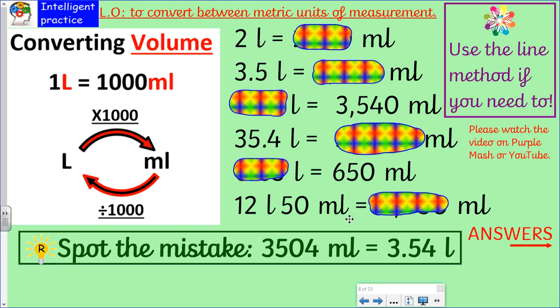And then we've got to spot the mistake for your reasoning problem. 3,504 millilitres equals 3.54 litres. There is a mistake there. Can you figure out what it is? So just like the last test, these answers are on Purple Mash, but I'll also show you them on the next slide of the video and maybe just go through a couple of bits with you. So do make sure you've paused and you've had a go before you look at the answer slide.